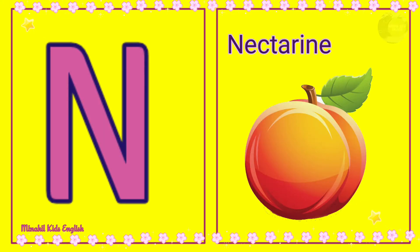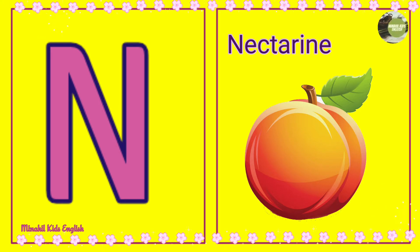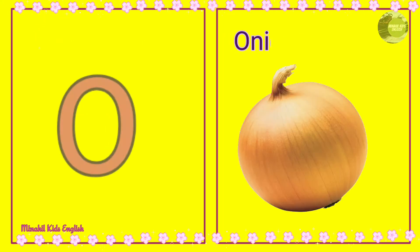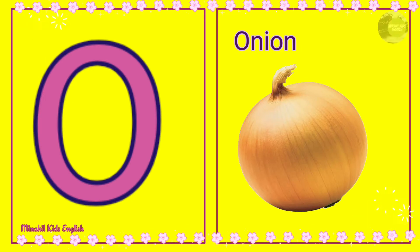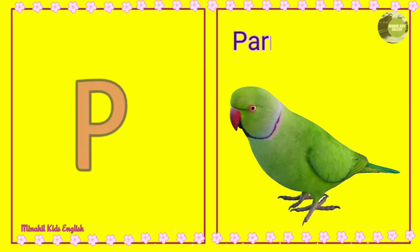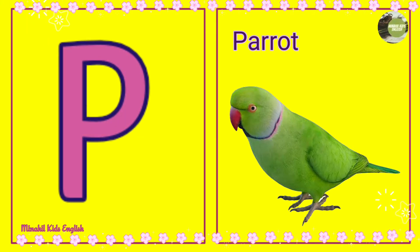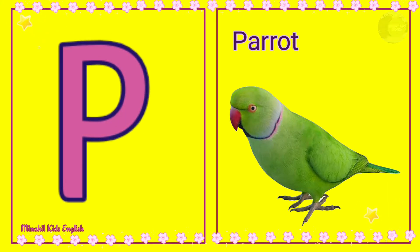N is for Nectarine. Nectarine. O is for Onion. Onion. P is for Parrot. Parrot.